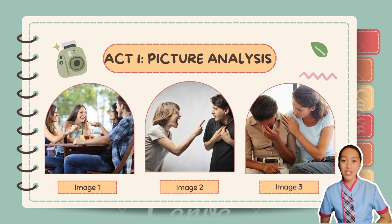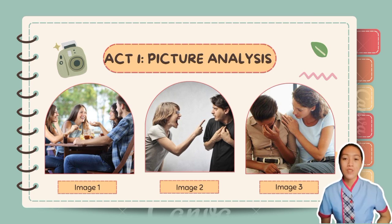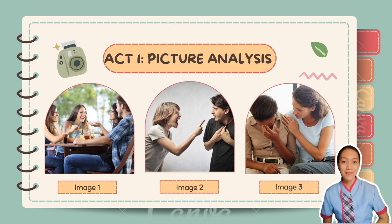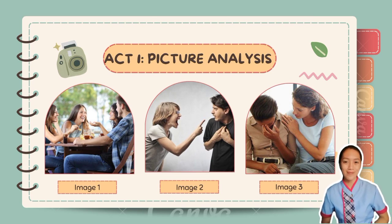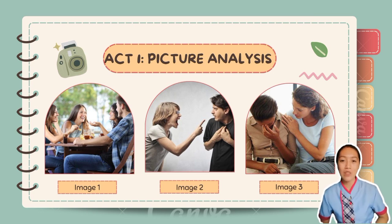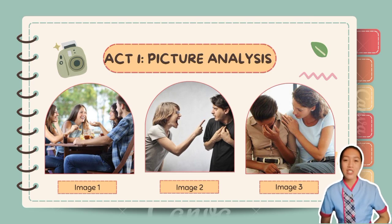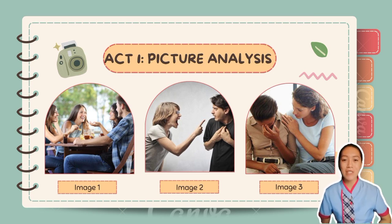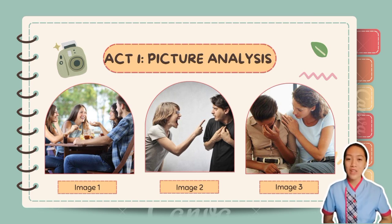Now let's have an activity to motivate you and give you a glimpse of what our new topic will be about. This activity is called Picture Analysis. I have here two pictures — look at them carefully as I will ask you some questions. The images depict how communication takes place. Each picture shows a person trying to convey different messages and purposes based on their facial expressions and gestures. Based on the three images, we can define communication as the exchanging of ideas and feelings, where each speaker has different purposes and goals to achieve.